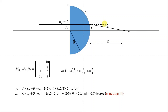Note the negative sign — there is a sign convention for the matrix method. If the angle is positive with respect to the optical axis, it is a positive number. If the angle goes below the line parallel to the optical axis, that angle is accepted as a negative angle.